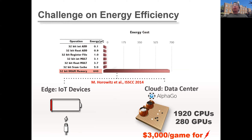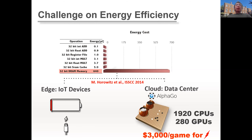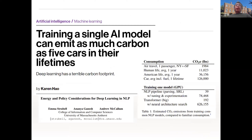In the data center, the electricity bill caused by energy consumption is very expensive. For example, for AlphaGo's first generation, running one Go game required a charge of three thousand dollars per game in electric bills — that is very expensive.